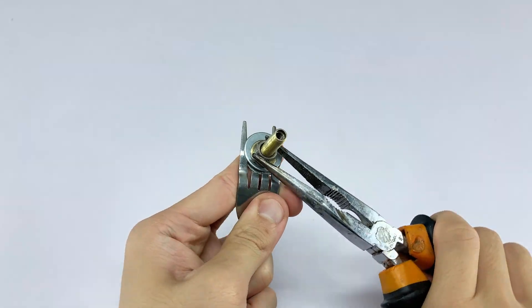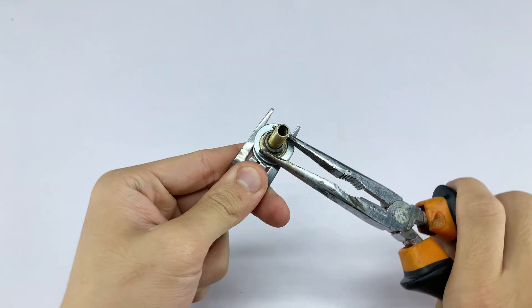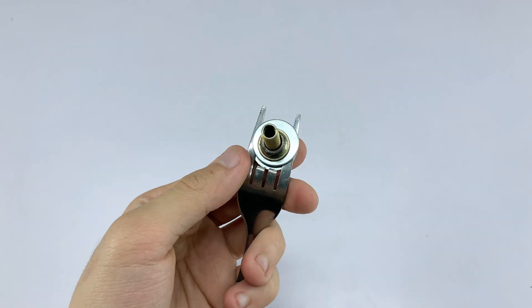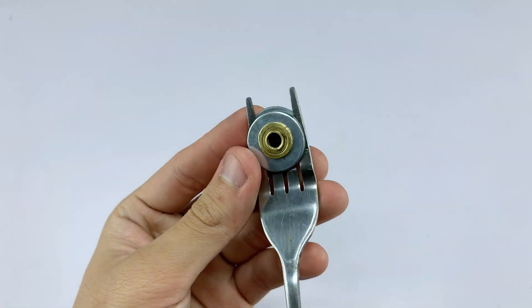I'm using pliers to carefully tighten the entire assembly, ensuring the valve stem is held very firmly by the fork tines and washers. A tight connection here is key for stability and functionality.